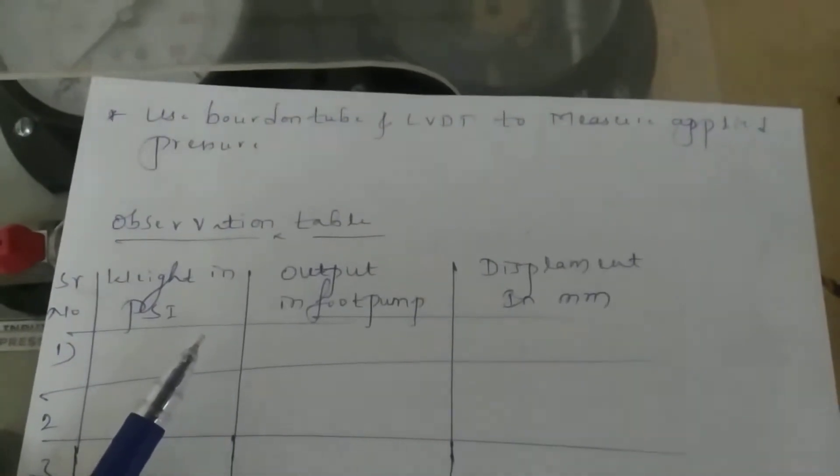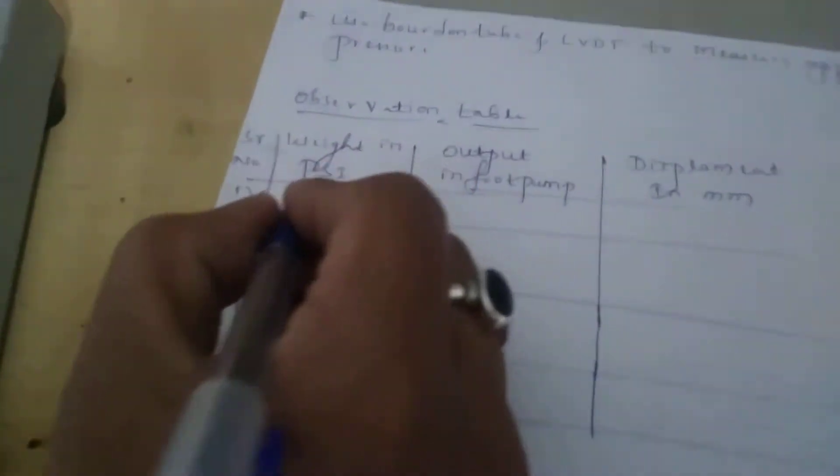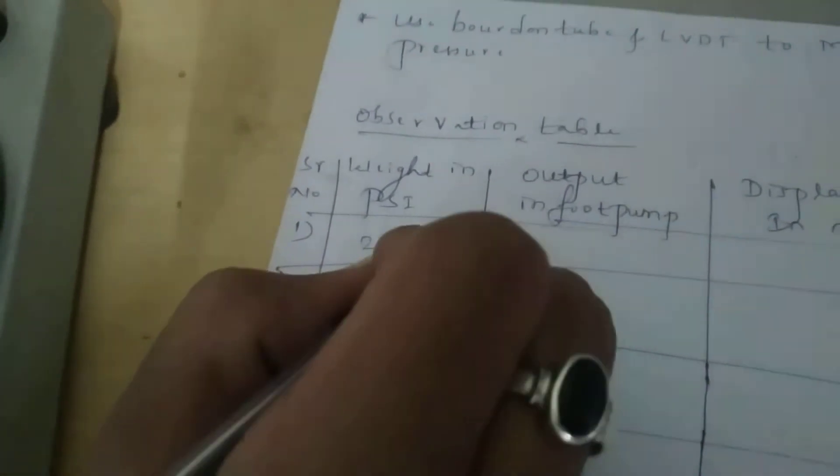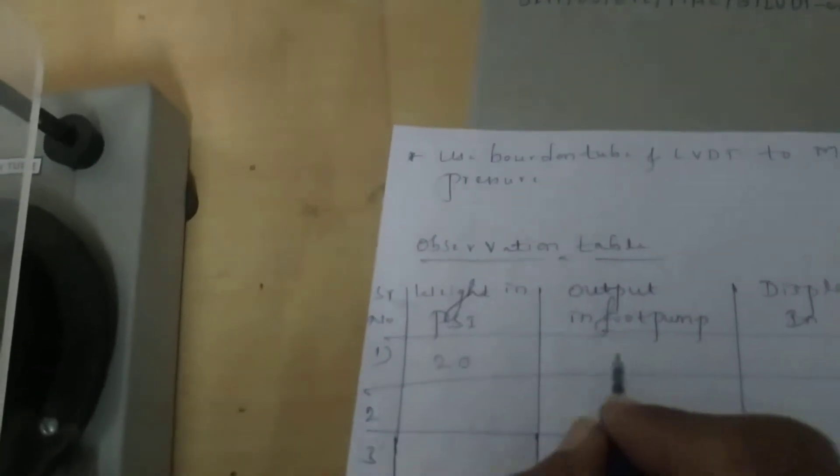In SI units, you measure in terms of kg per centimeter square. So I will apply the first reading. Applying pressure from the foot pump, you get the weight input as 20 PSI and the output reading on the foot pump gauge shows 22. Comparing these two, the difference — the error — is 2. The displacement reading is 0.06.